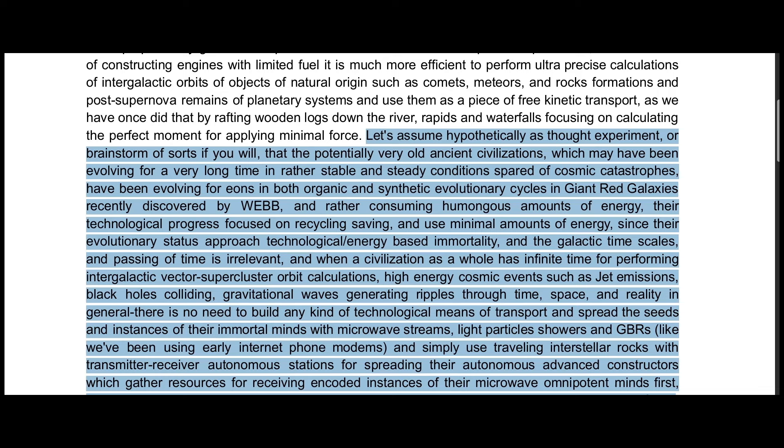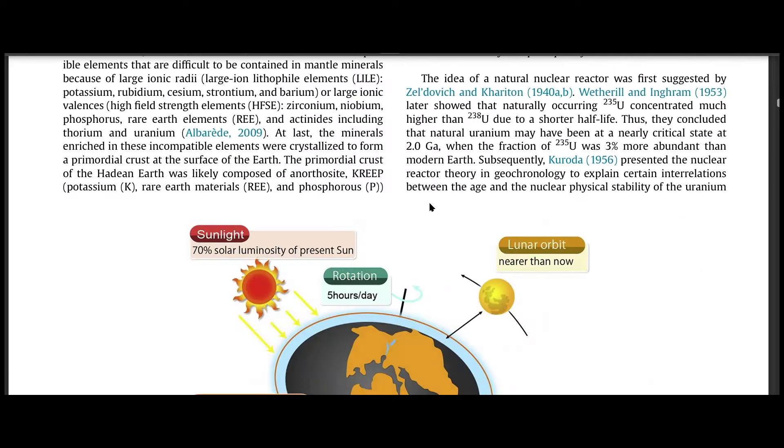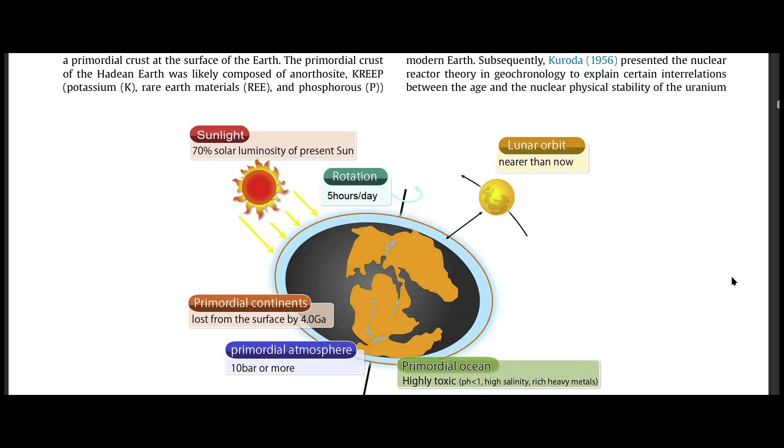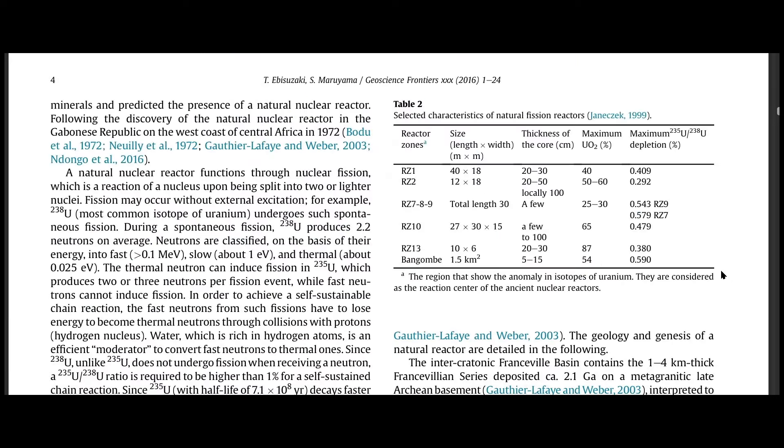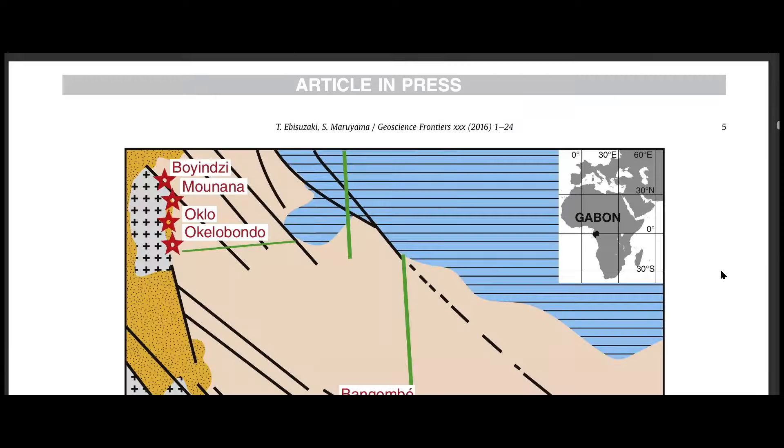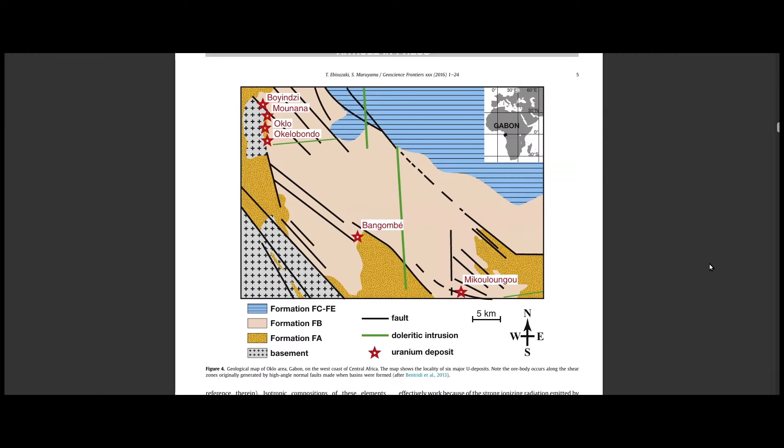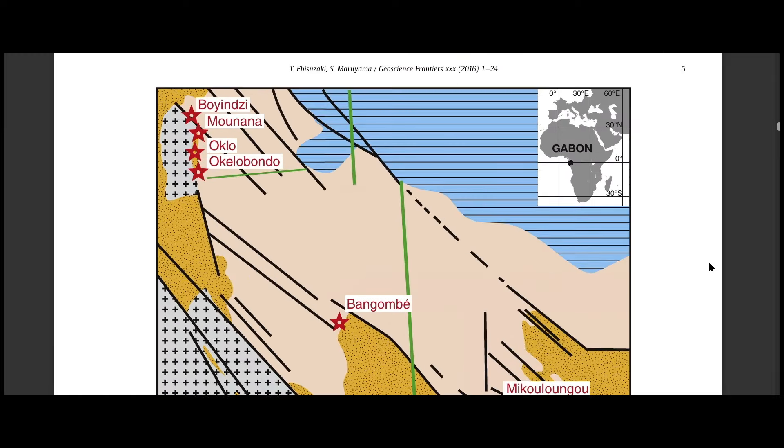Let's assume hypothetically as a thought experiment, or brainstorm of sorts if you will, that potentially very old ancient civilizations which may have been evolving for a very long time in rather stable and steady conditions devoid of cosmic catastrophes, have been evolving for eons in both organic and synthetic evolutionary cycles in giant red galaxies recently discovered by Webb, and rather than consuming humongous amounts of energy.